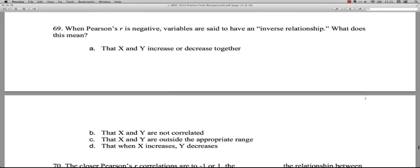Question 69: When Pearson's R is negative, variables are said to have an inverse relationship. When it's positive, they're said to have a direct relationship. Okay, so they have an inverse relationship. What does this mean? The first one, A, is that X and Y increase or decrease together. No, they don't move together. They move contrary-wise. They move opposite of each other.